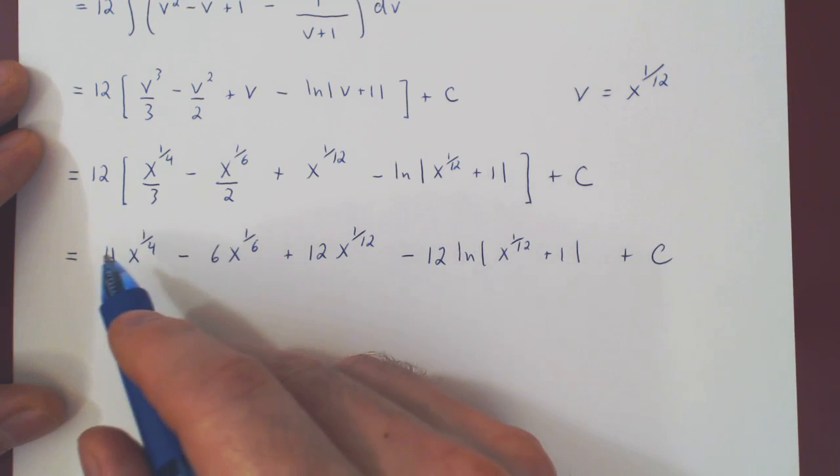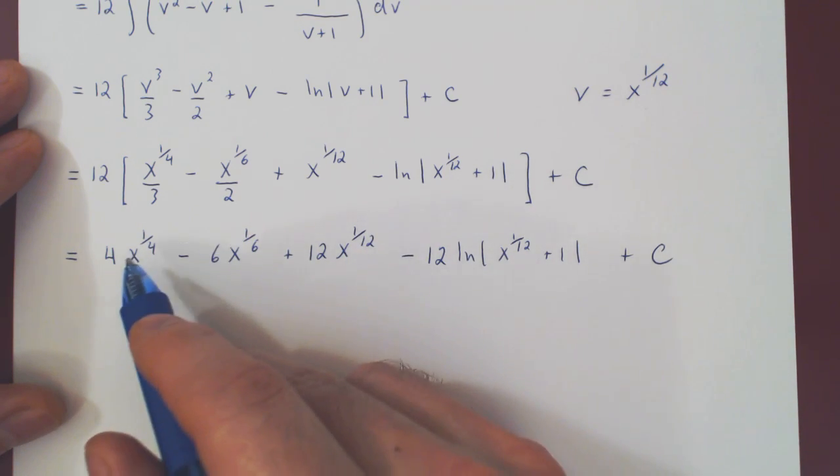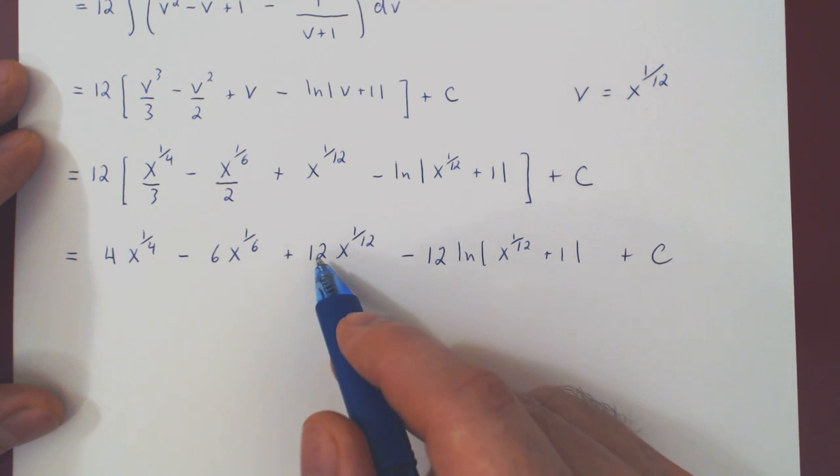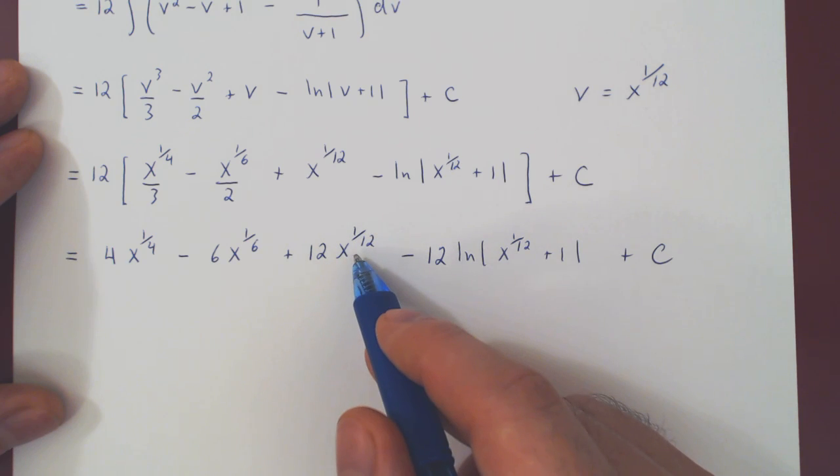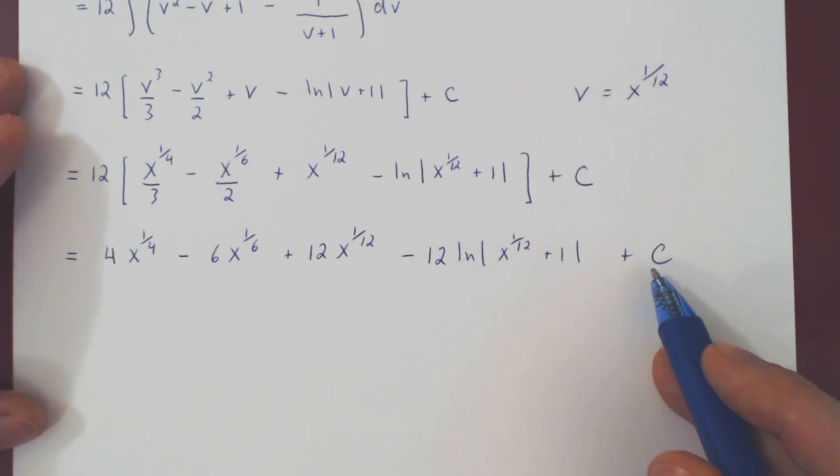What's kind of nice about this is you can look at the exponents and scalar multiples. So it equals 4x to the 1 over 4 minus 6 x to the 1 over 6 plus 12 times x to the 1 over 12. So it just kind of looks, you know, it looks good.